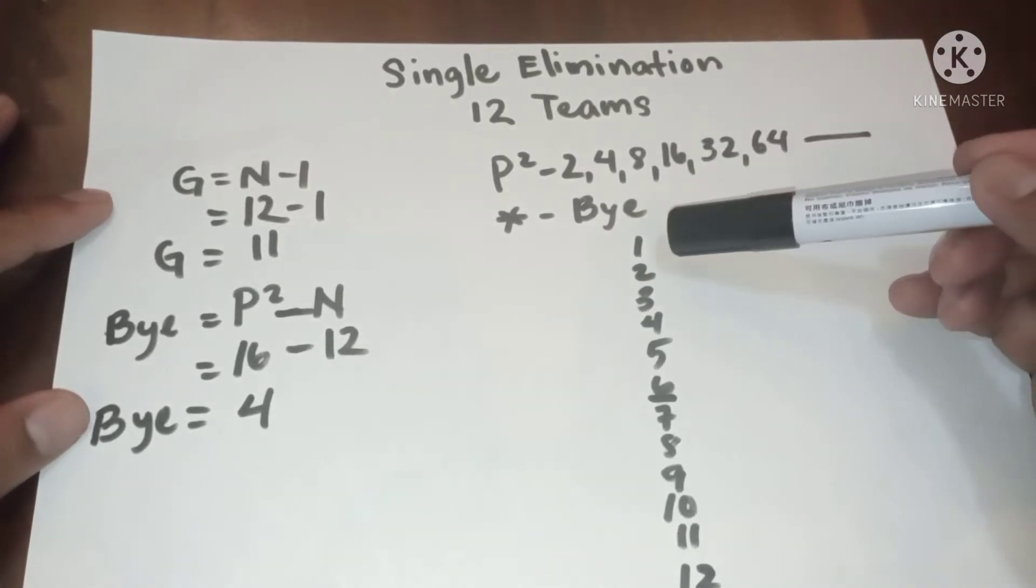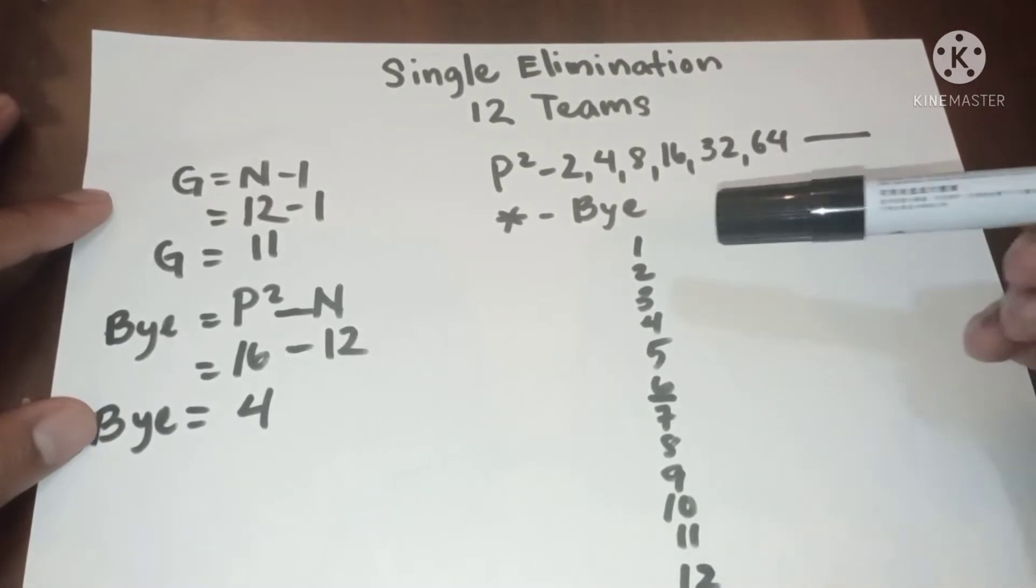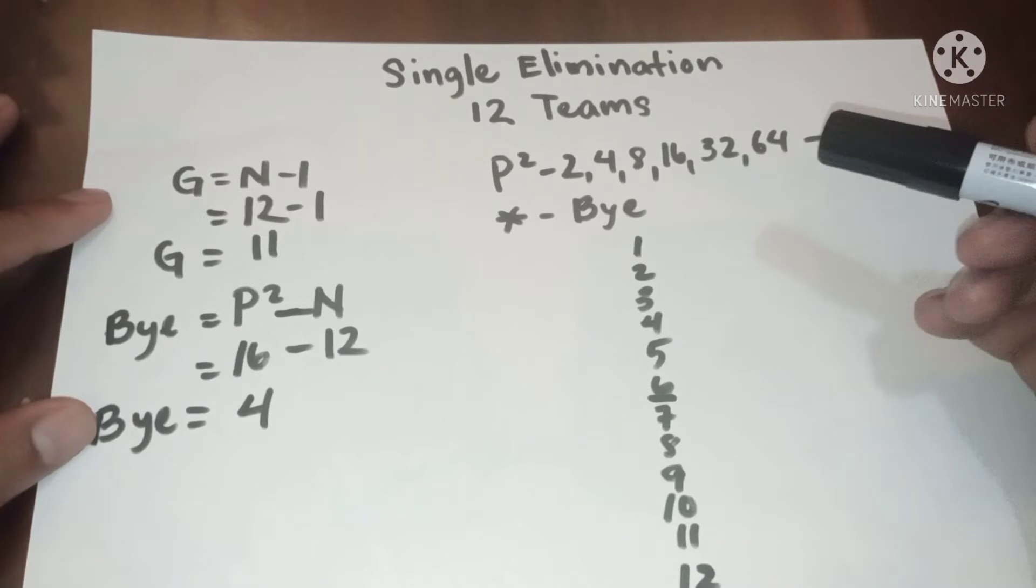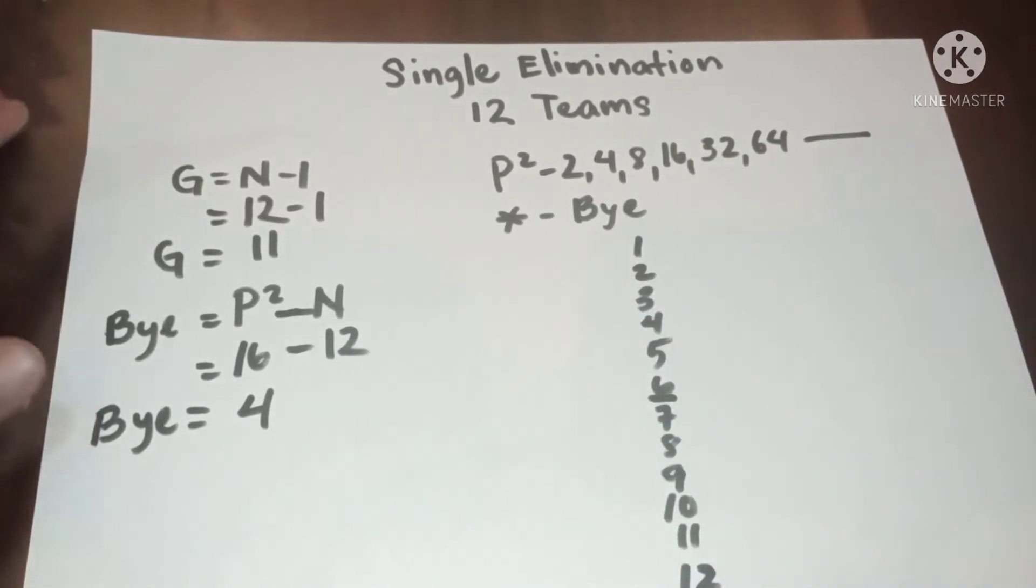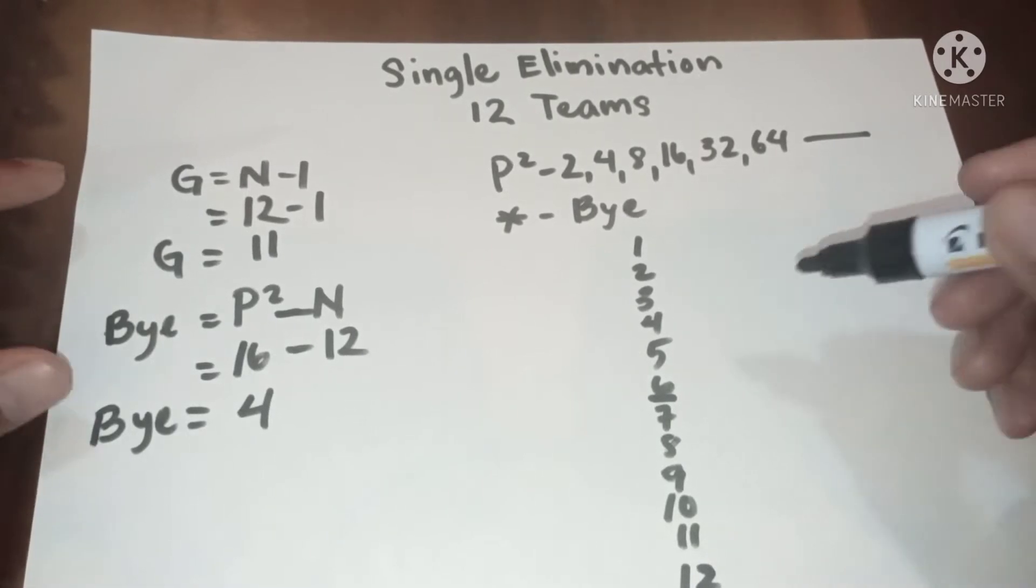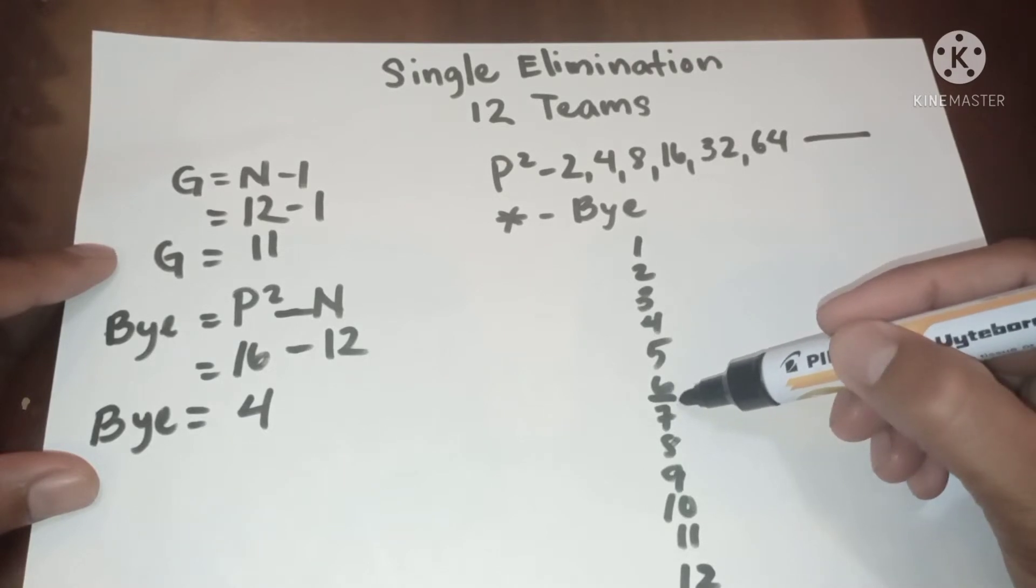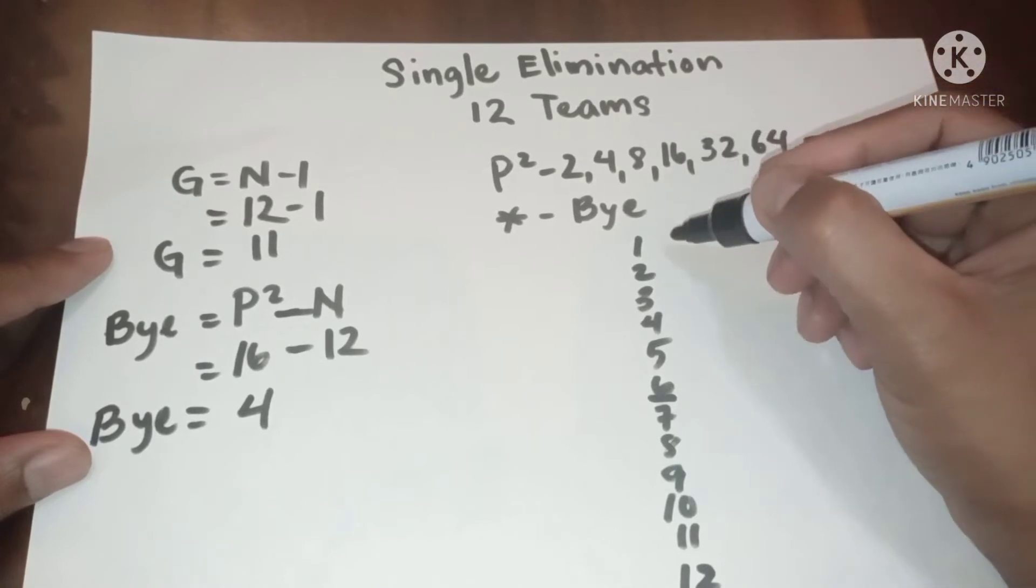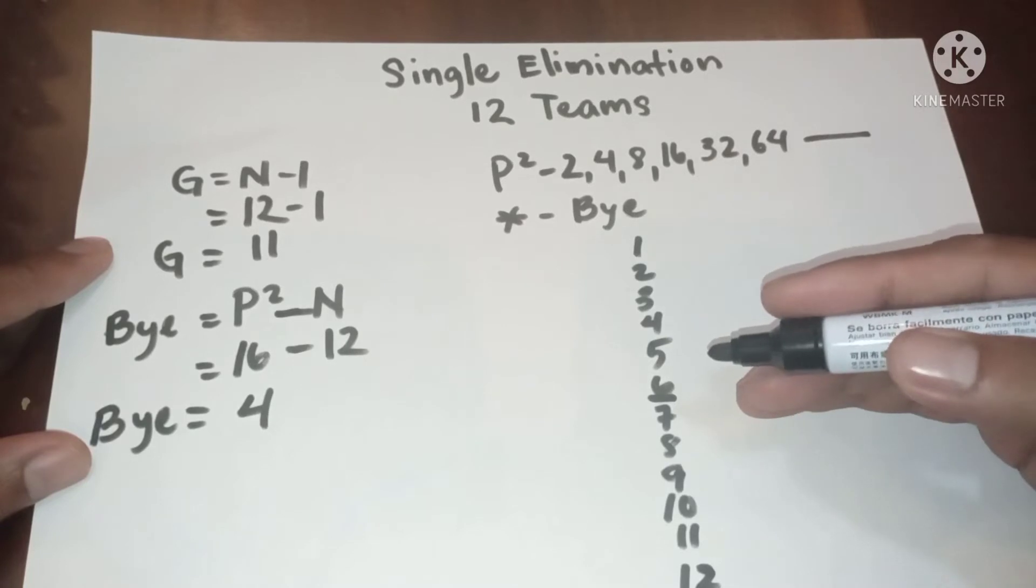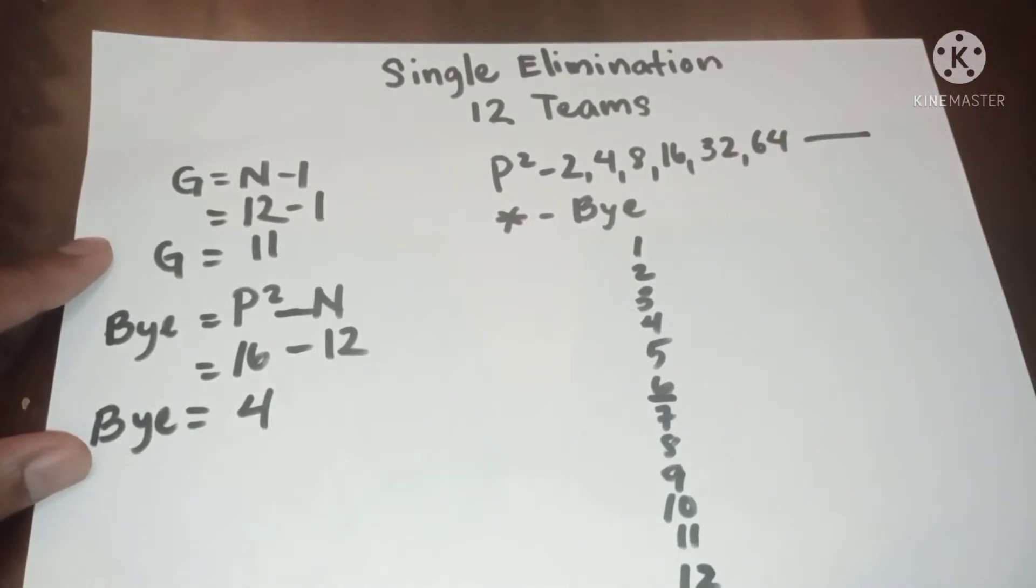Now we need to write down vertically downward the number of teams and let us now place the four byes. In 12 teams, but first we need to bracket the 12 teams into two between six and seven. Now let us place the bye for six as the upper bracket and then the other six in the lower bracket.